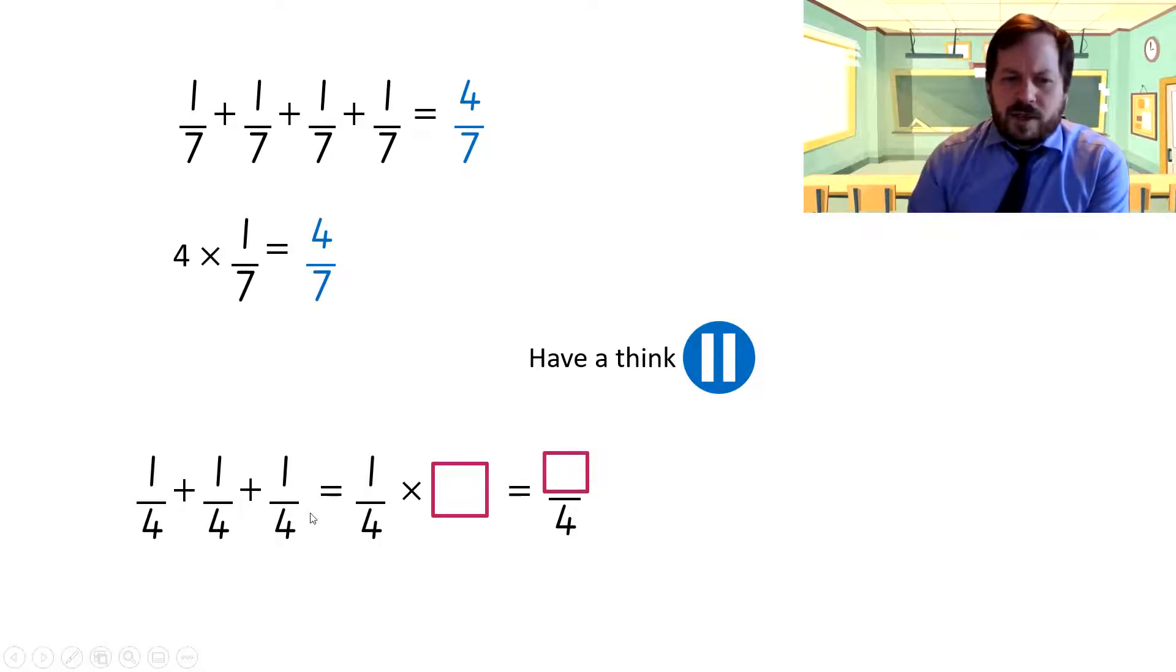So three-quarters is the same as one-quarter times what? Which is what? Have a think. See what you think. OK, so how many quarters have I got? Three. Yep. So I'm timesing it by three. Hmm. I don't change the bottom. I just multiply at the top. So one times three is three. Nice and easy, eh?